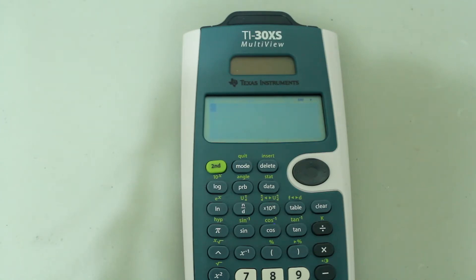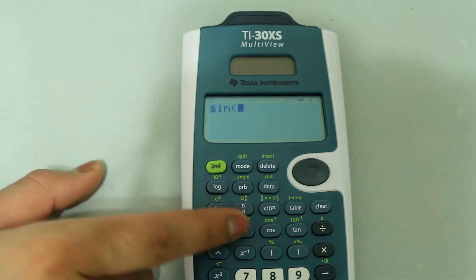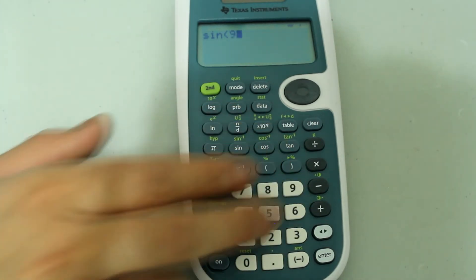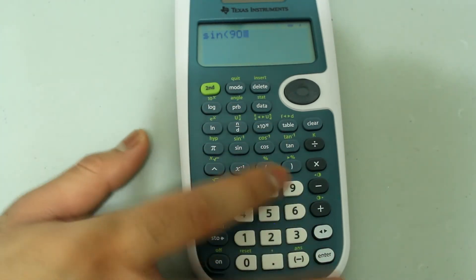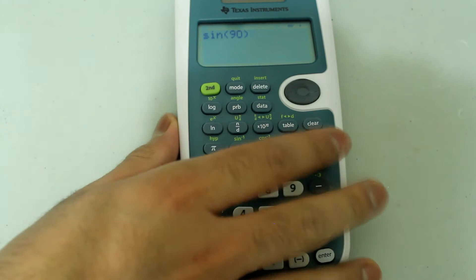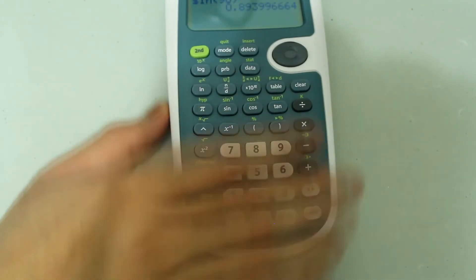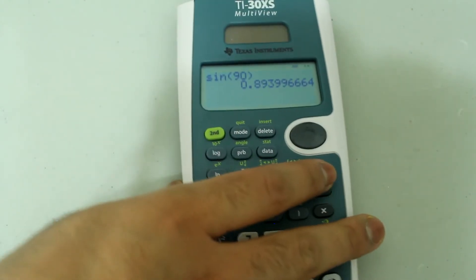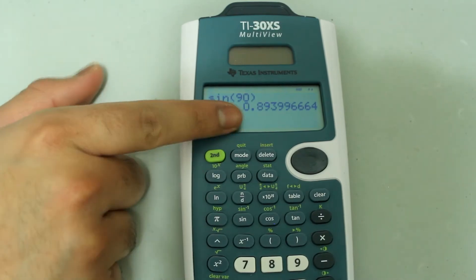We know that sine of 90 degrees is 1. However, if I type in sine and then 90 and close the parenthesis and press enter, I get an answer that's not 1.